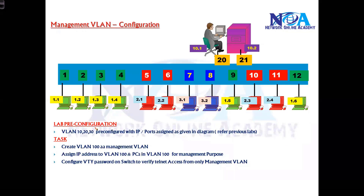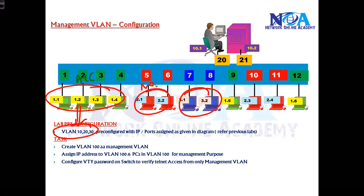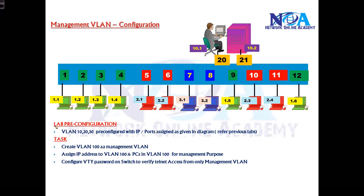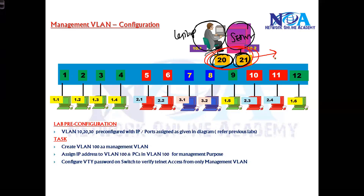I'll be using the same topology from the previous lab where I have configured VLAN 10, VLAN 20, and VLAN 30 for accounts, marketing, and sales departments. Additionally, I'm connecting two computers — a laptop and a syslog or SNMP server — on port numbers 20 and 21. These ports should be members of a separate VLAN, so I'm going to create VLAN 100 for management purposes.